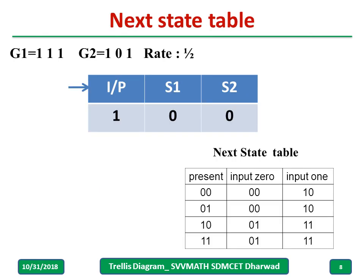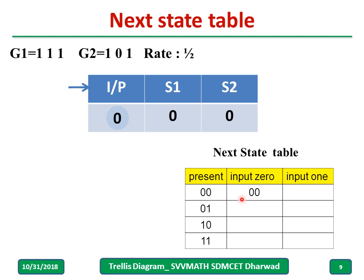The next state and output table uses g1 = 111 and g2 = 101. Using m1 as input and m2, m3 as states S1 and S2: when the present state is 00 and input is 0, the next state is determined by right-shifting, so the next state remains 00. When present state is 00 and input is 1, right-shifting gives next state 10.